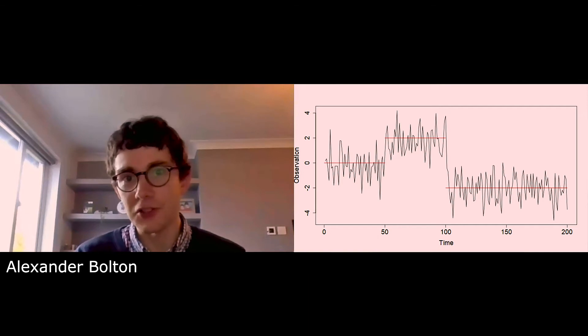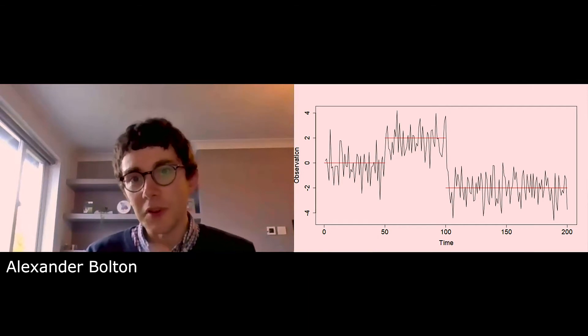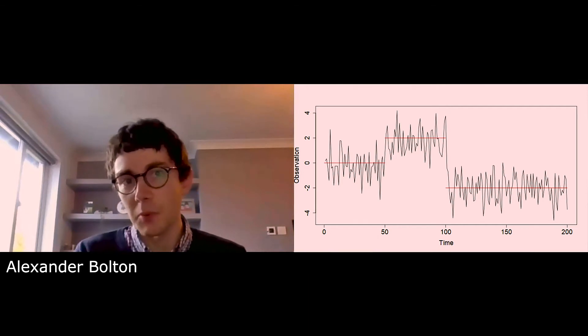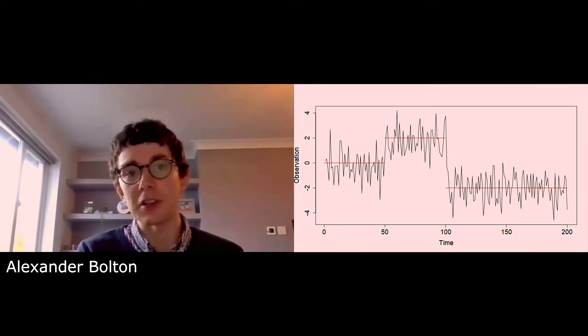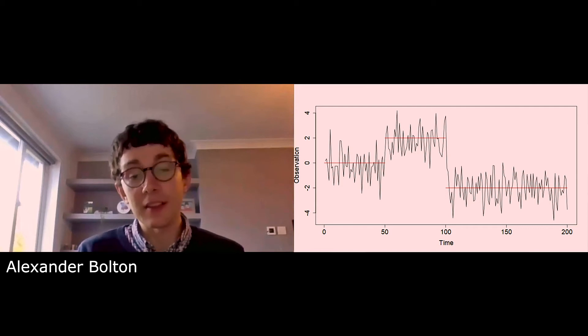My basic definition of a change point is something that segments a time series into patterns of behavior. Here's an example: the first 50 observations are generated from a normal distribution with mean zero, standard deviation one; then 50 from a normal with mean two, same standard deviation; then 100 observations from a normal with mean minus two. In this case, it's pretty obvious where the changes are.